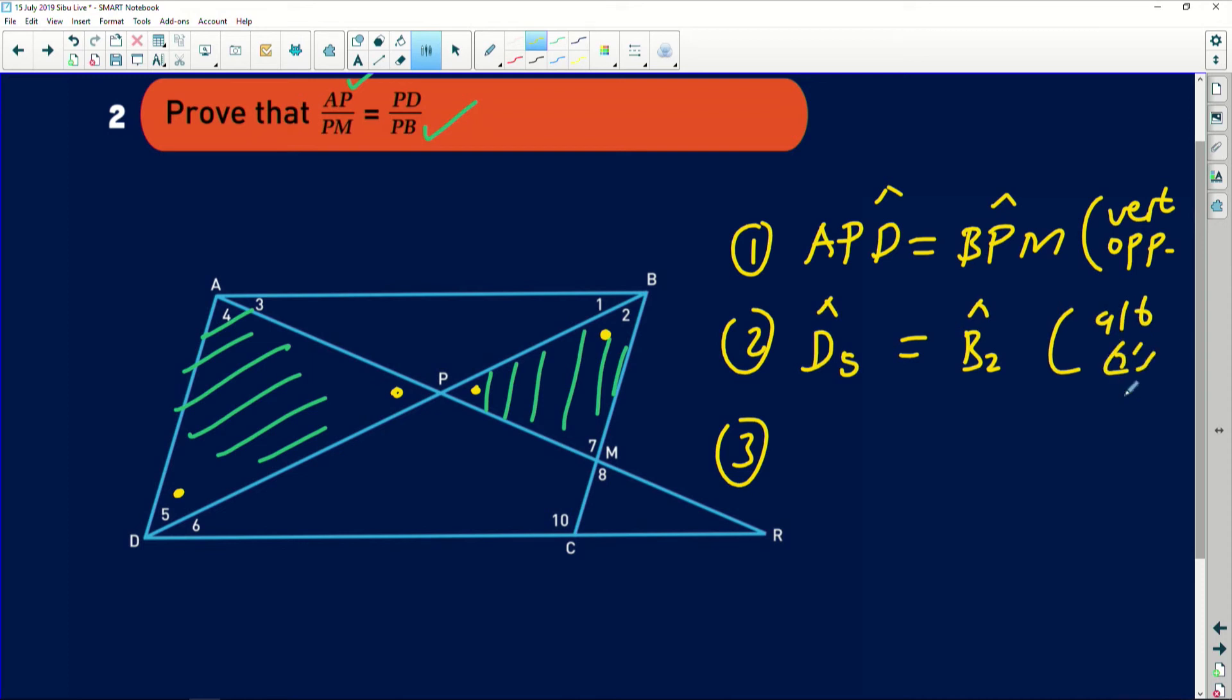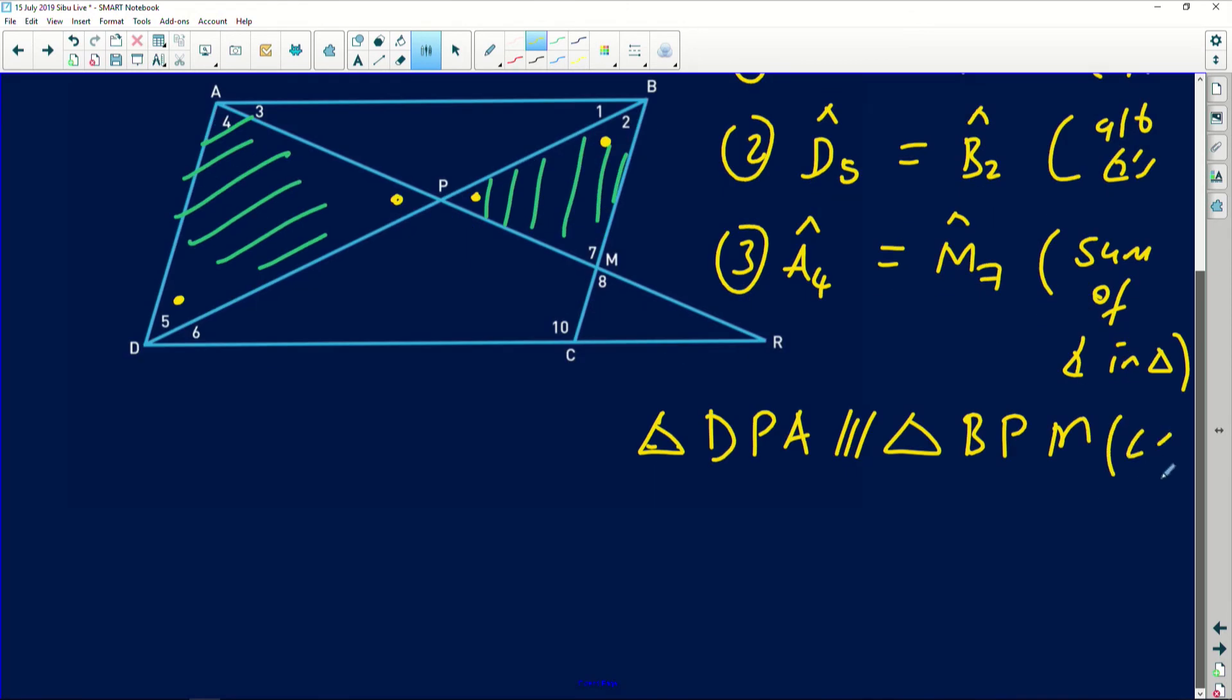The second thing that I'm going to claim here is that this one is equal to that one, which means angle D5. Angle D5 is simply equal to angle B2 and they are alternate angles. We can clearly see that. And then lastly, obviously, we'll then conclude that angle A4 is simply equal to angle M7. And this is because of the fact that this is sum of angles in a triangle and up to 180 degrees.